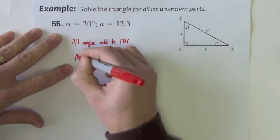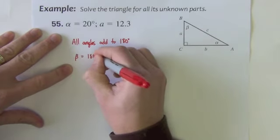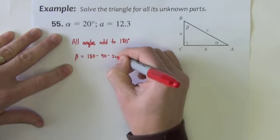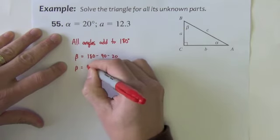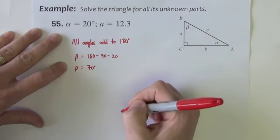So I would start with angle beta. It's 180 minus the 90 minus the 20 and angle beta would be 70 degrees.